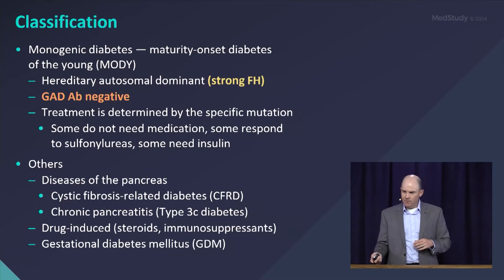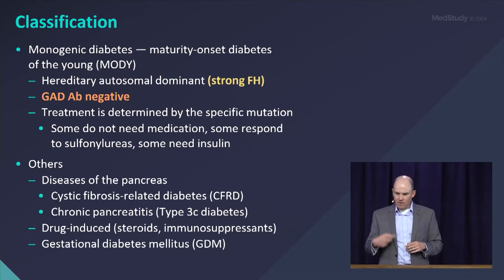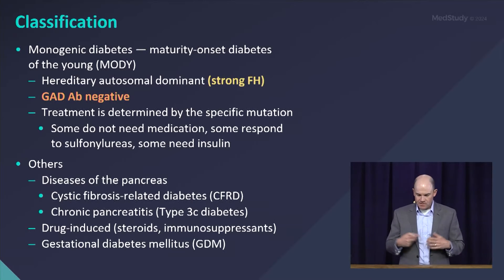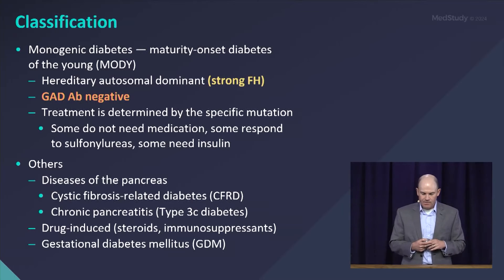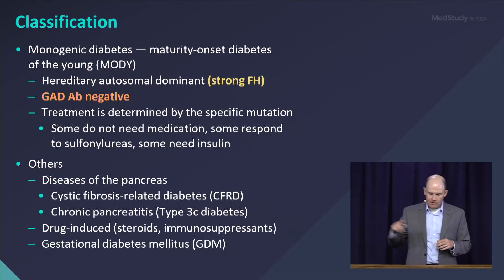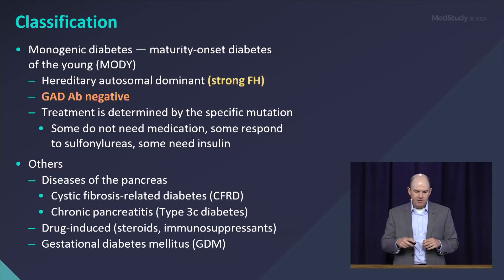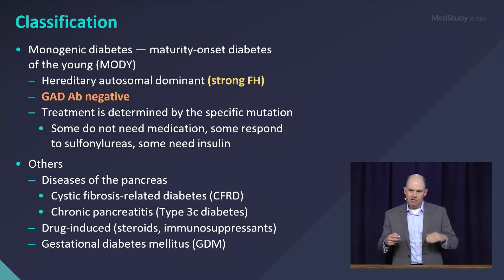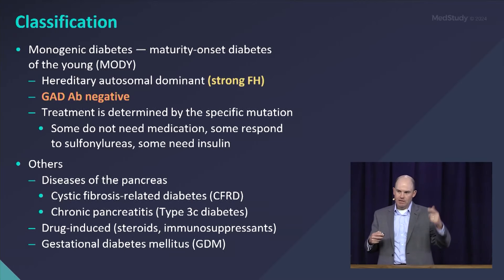There are some other forms of diabetes as well — CF-related diabetes from cystic fibrosis and pancreatitis-associated diabetes — but you don't need to worry as much about those. If you get a test question on classification, it's probably going to be one of the four we discussed.